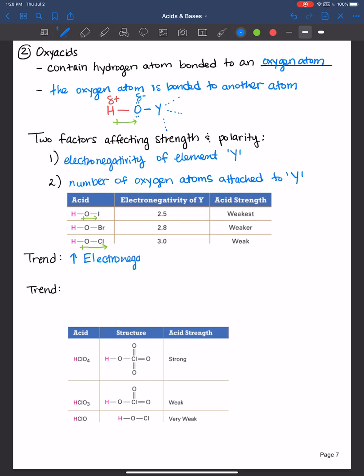Let's write down that trend. The higher the electronegativity of element Y, we increase the acid strength.